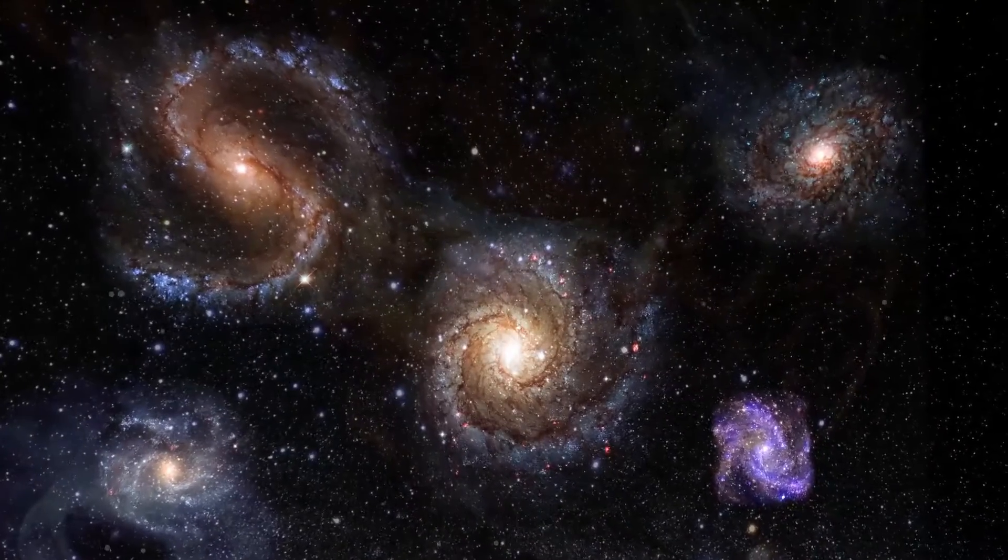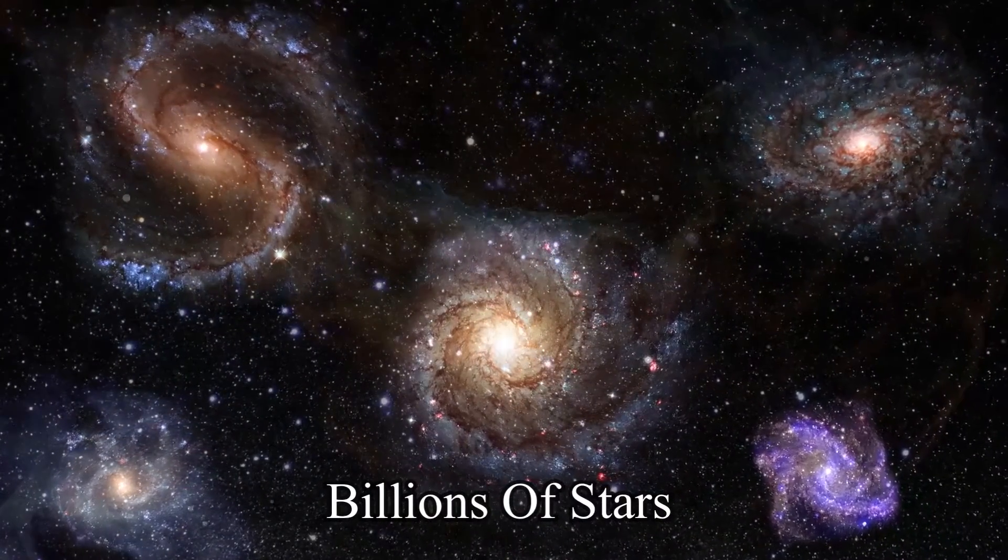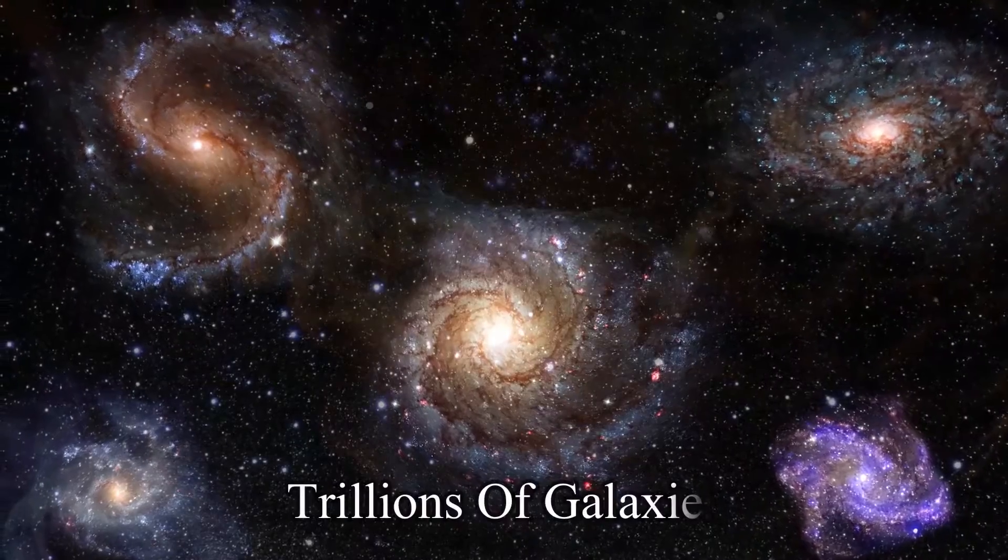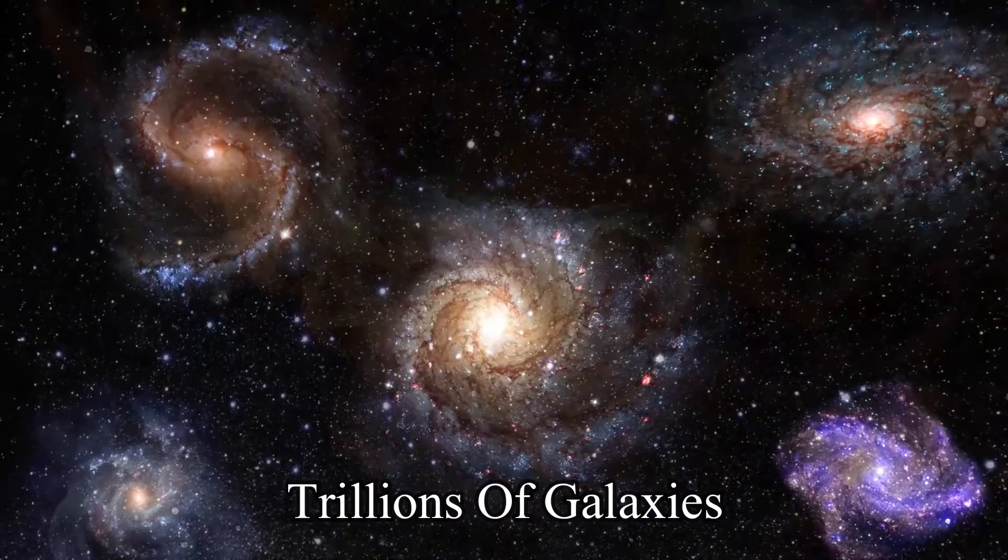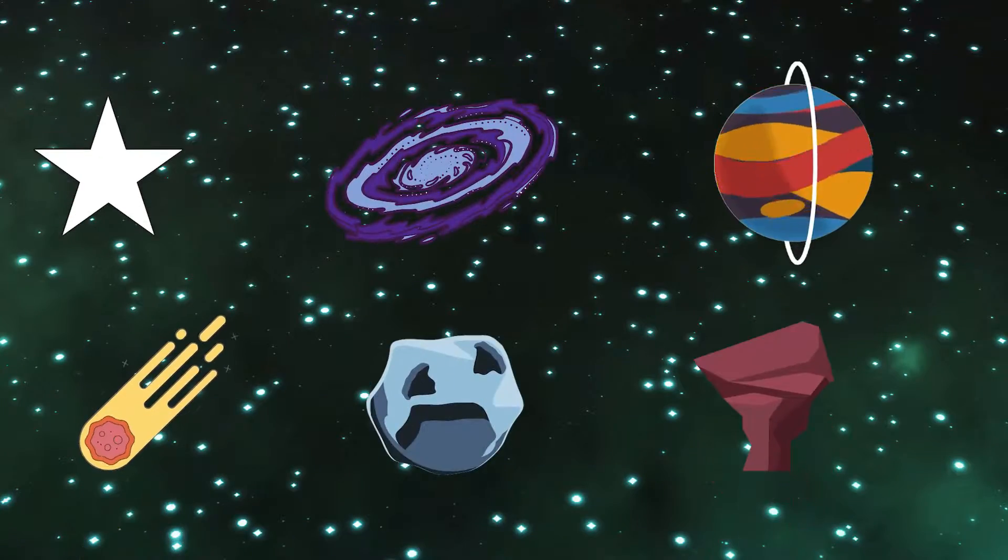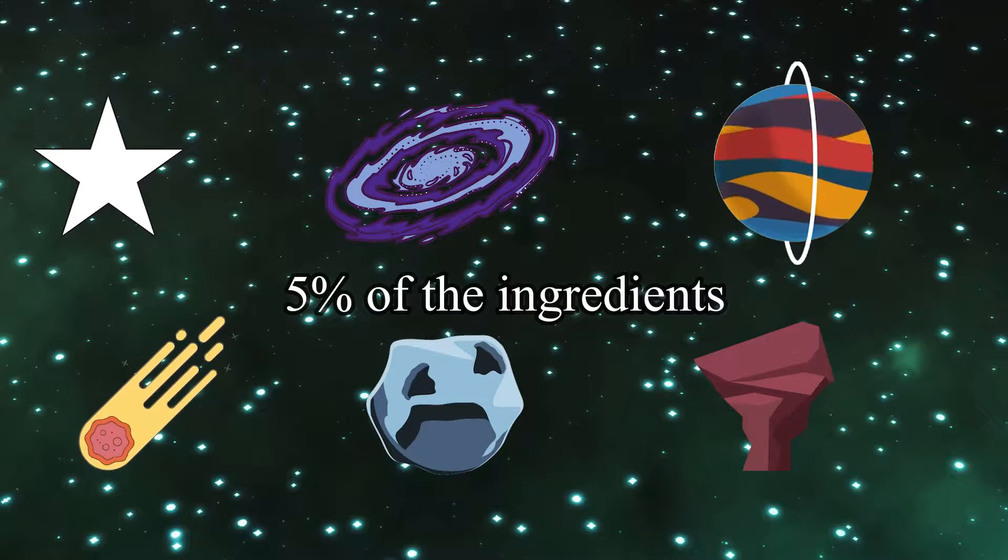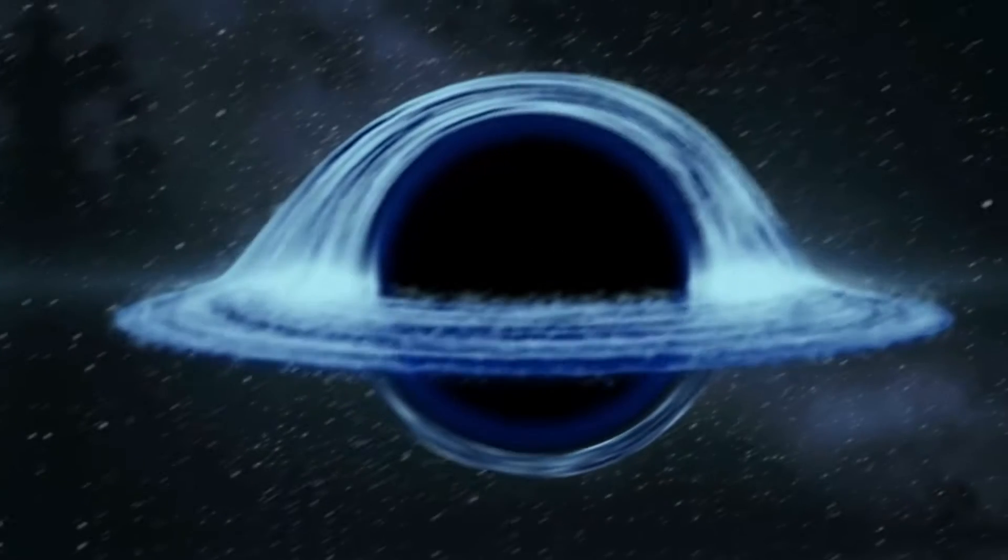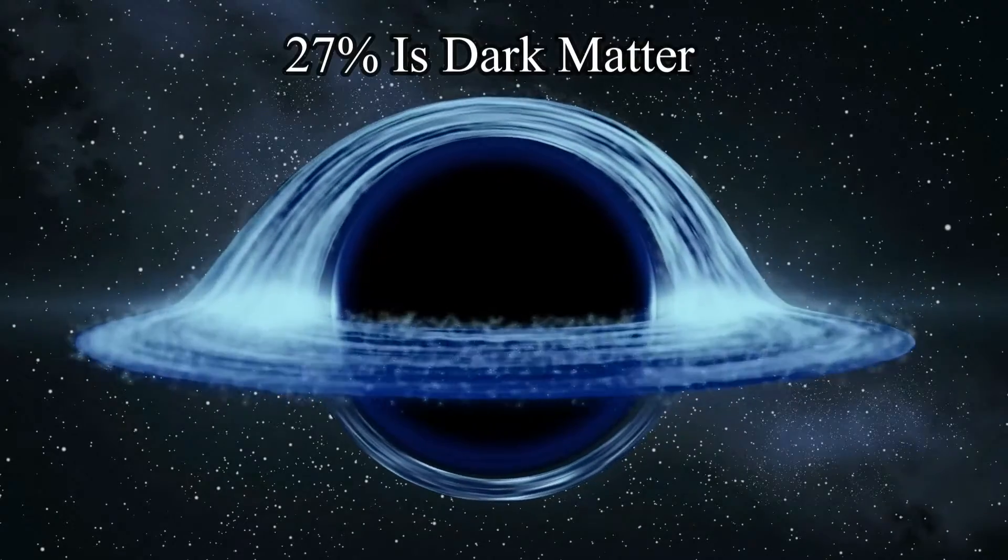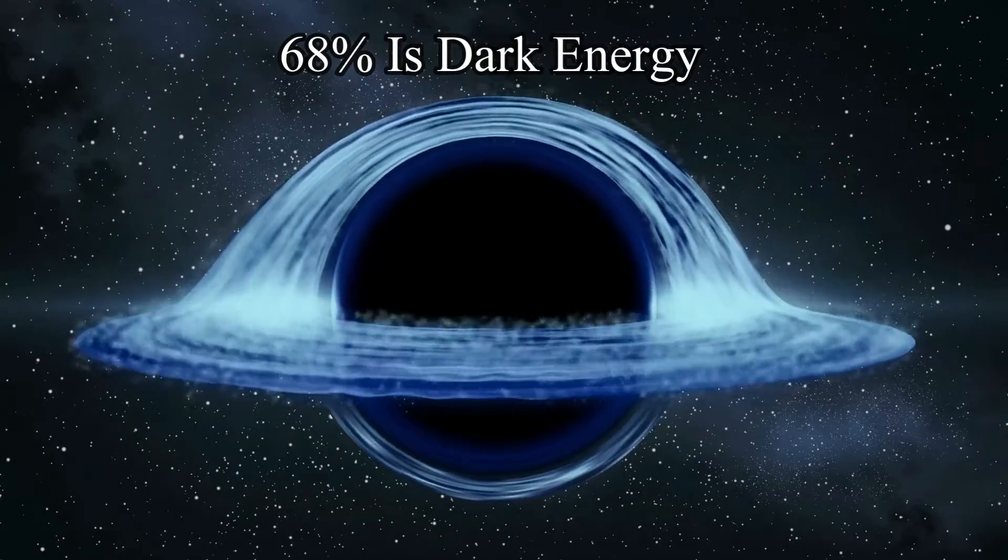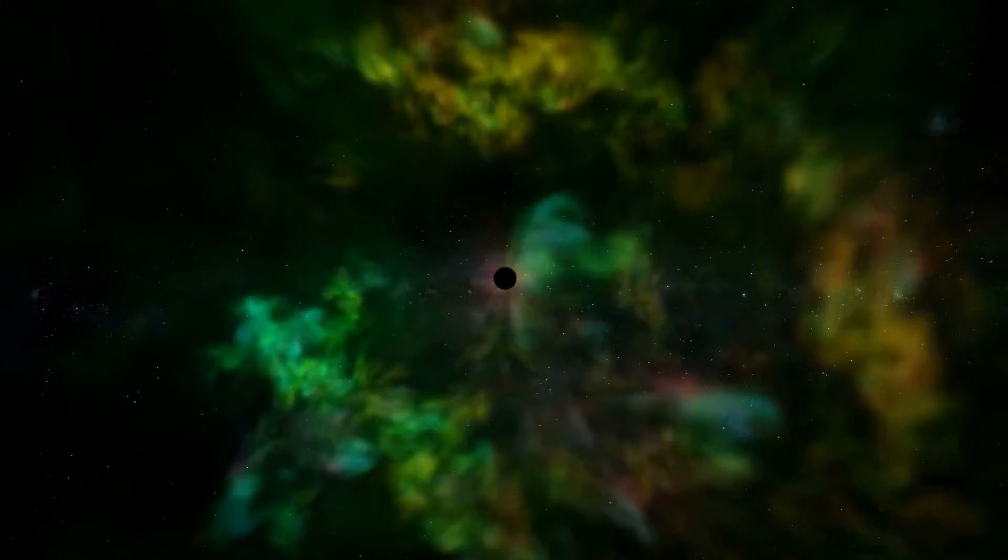In our galaxy alone, there are billions of stars, and in the observable universe, there are trillions of galaxies. Even with that many stars and galaxies in the universe, they only account for 5% of the ingredients that make up the universe. The other 27% is dark matter, and 68% is dark energy, neither of which has ever been seen on Earth.